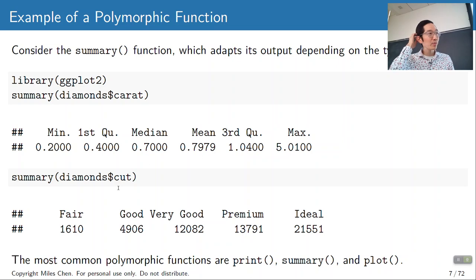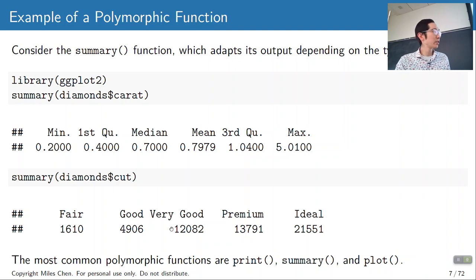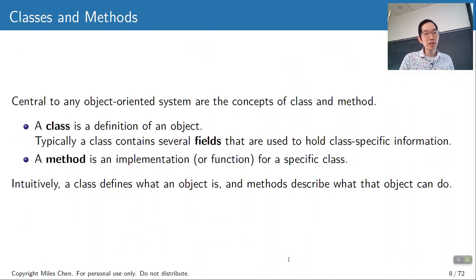Other examples of polymorphic functions are things like plot and print — they behave differently depending on the object you give them.